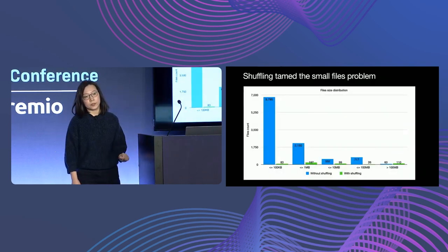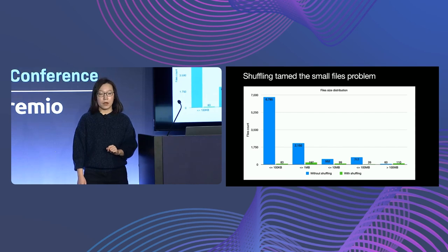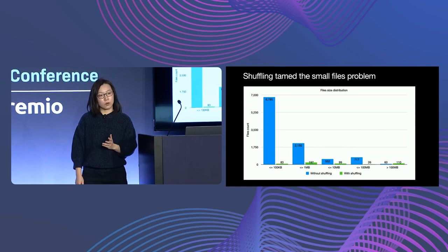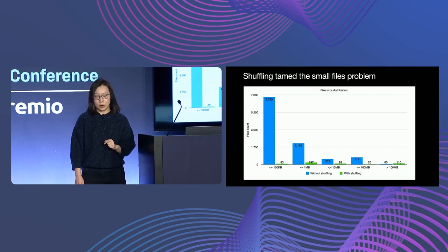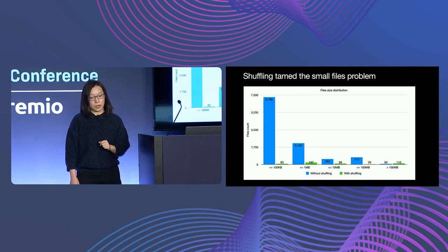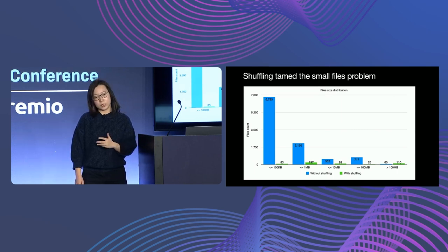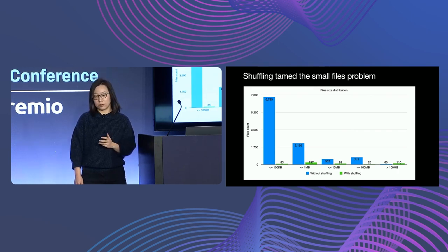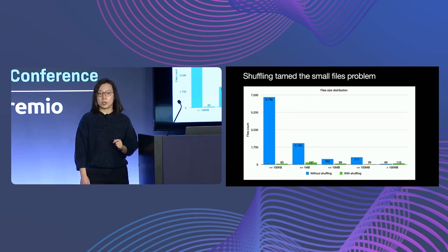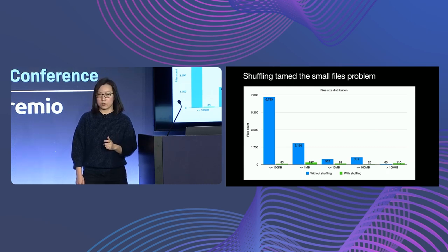We did further analysis on the file size distribution. The histogram shows that Smart Shuffling reduced small files significantly. Without shuffling, there are more than 6,000 files less than 100 KB. But with shuffling, there are only 83 files. Even for large files over 100 MB, Smart Shuffling helped to almost double the file number from 60 to 110.